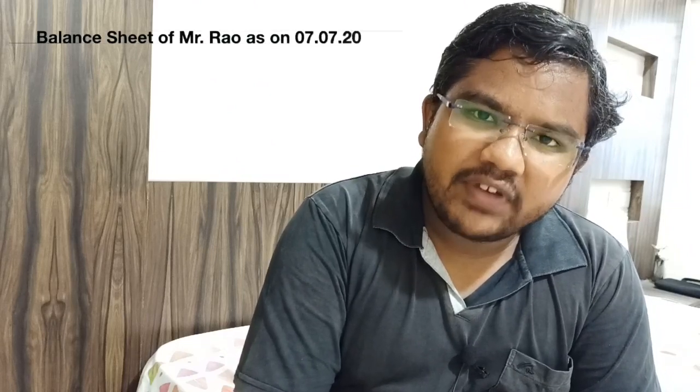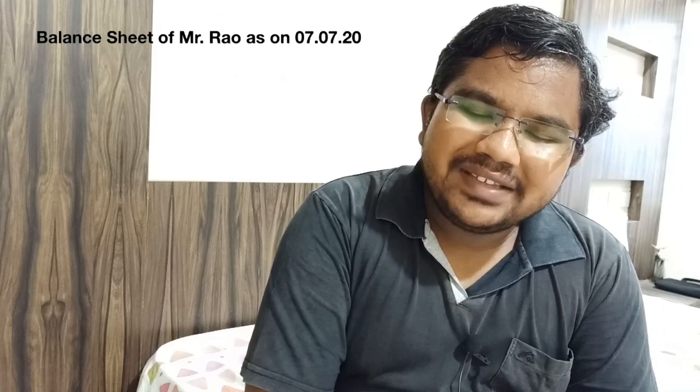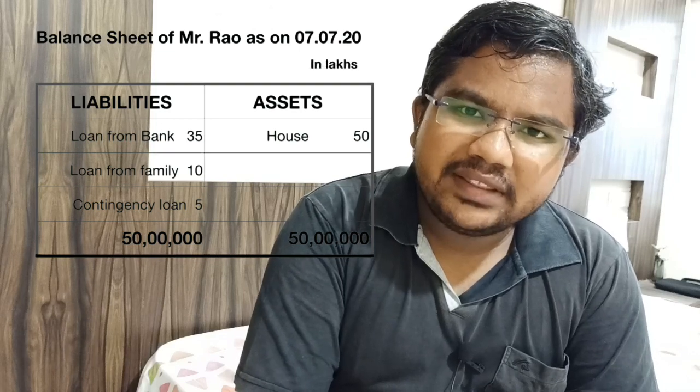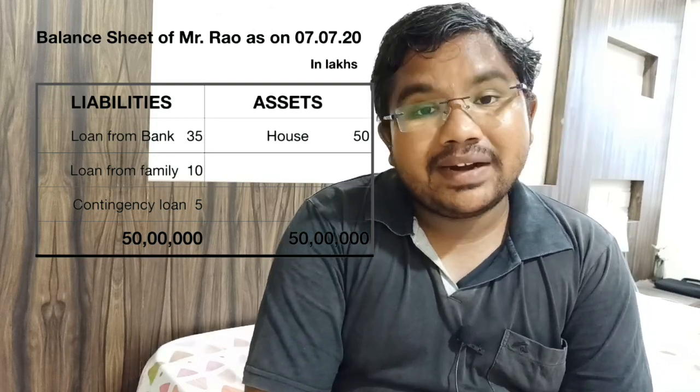The fundamental rule is: without matching of assets and liabilities, there is no valid representation of a balance sheet of an entity. Now, in the liabilities side, there is a contingency loan repayable in 12 months. Any kind of liability which is to be repayable within 12 months can be treated as a current liability.